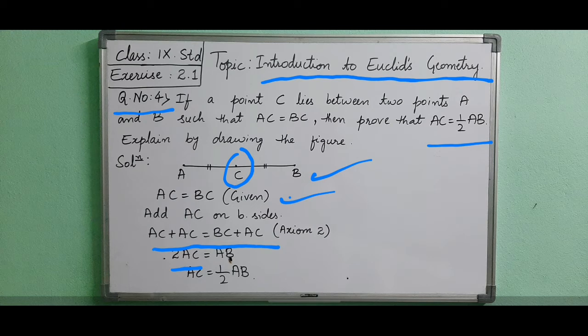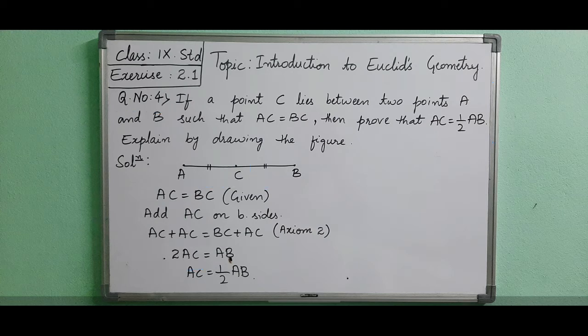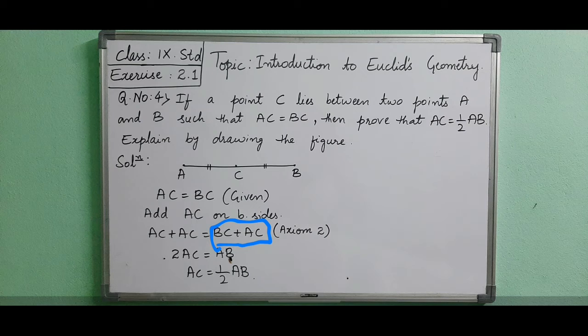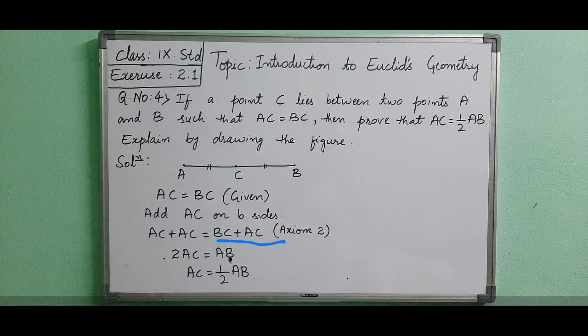If you see the figure here, BC and AC together, if we add them, they are forming AB. So, we can write AB in place of BC plus AC. That's why we are writing here AB.